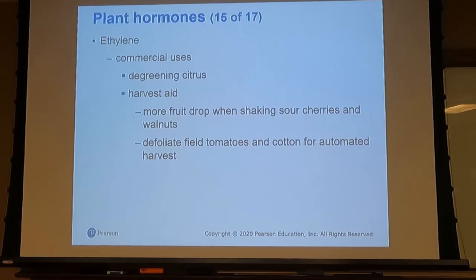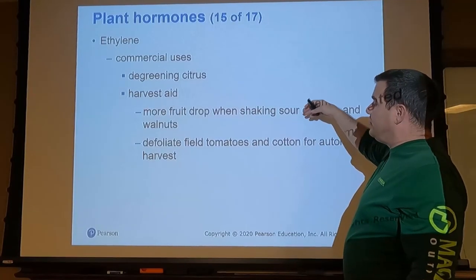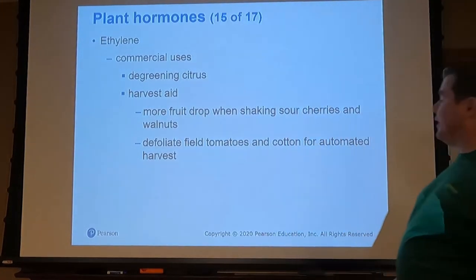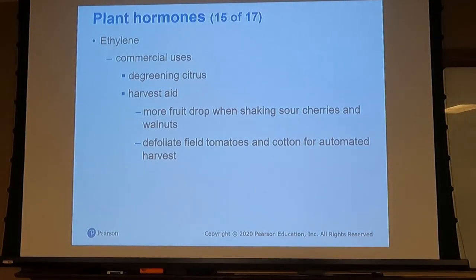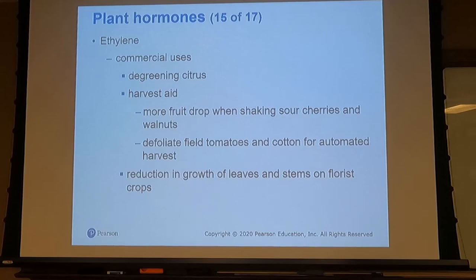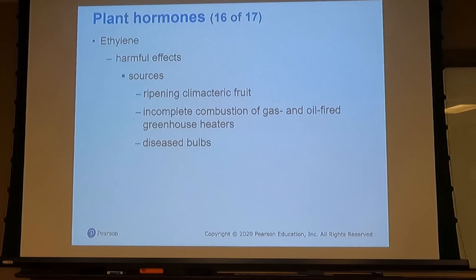Ethylene is used for degreening citrus and as a harvesting aid because it influences leaf abscission and can act as a defoliant — for example, field tomatoes and cotton are defoliated for easier harvest. Being from Mississippi, you can always smell when it's time to harvest soybean or cotton. Because ethylene is a gas, there's also potential for incomplete combustion from gas and oil greenhouse heaters to affect the gas ratio inside the greenhouse.